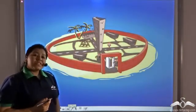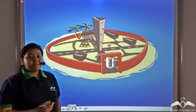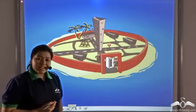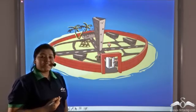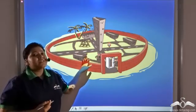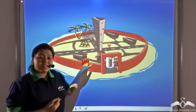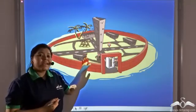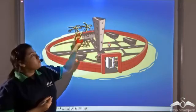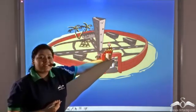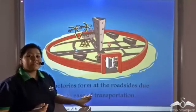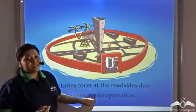Roads were built in the city, but other daily basic necessities were now required, and for that factories had to be set up. If you were asked to build factories, would you build them in some interior portion of the city where there are no roads, or would you build them at the roadsides? You would definitely build them at the roadsides because there is ease of transportation.